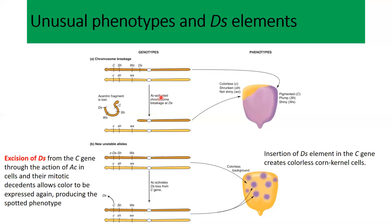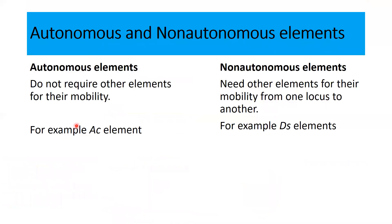Do not forget that the Ac element is always there to activate the movement of the Ds element. There are two types of transposable elements: autonomous elements, which do not need others for their mobility — for example, the Ac or activator element can move itself from one locus to another. Non-autonomous elements always need other factors for their mobility — for example, the Ds element, which always needs the activator element and cannot move itself.